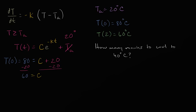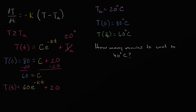Now let's write what we know. Temperature as a function of time is: T(t) = 60 e to the negative kt, plus 20. Now we need to solve for K, and we can use the condition that T(2) = 60 to do so.